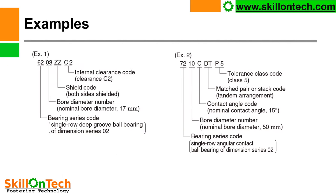Example 1: bearing number 6203ZZC2. '62' is the bearing series code identifying a single row deep groove ball bearing of dimension series 2. '03' gives the bore diameter number — internal bore diameter 17 mm. 'ZZ' is the shield code — both sides shielded, meaning lubrication (grease) is sealed inside. 'C2' is the internal clearance code indicating tight clearance.